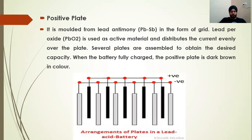The first main part is the positive plate. Every battery has two types of plates: positive and negative. The positive plate is molded from lead and antimony in the form of a grid. Lead peroxide (PbO2) is used as the active material and distributes the current evenly over the plate.